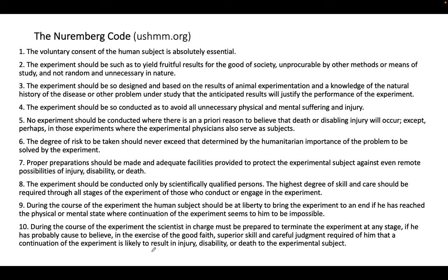Here is the Nuremberg Code. A couple of major points: first, the voluntary consent of the human subject is absolutely essential. Number two, the experiment should be such as to yield fruitful results for the good of society — it should not be random and unnecessary, so the purpose of the research needs to be for good. Number four, the experiment should be conducted to avoid all unnecessary physical and mental suffering and injury. There are many more important things in the Nuremberg Code worth reading.